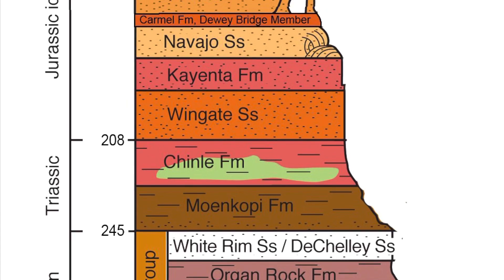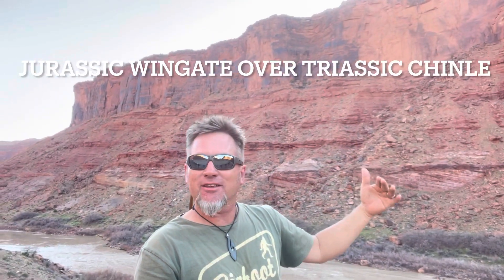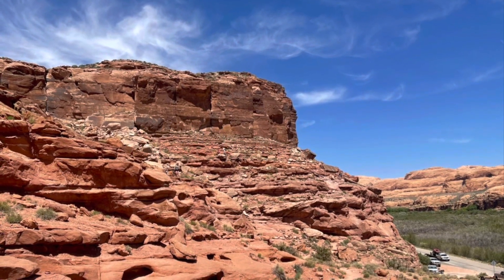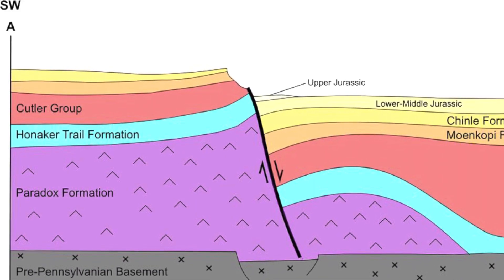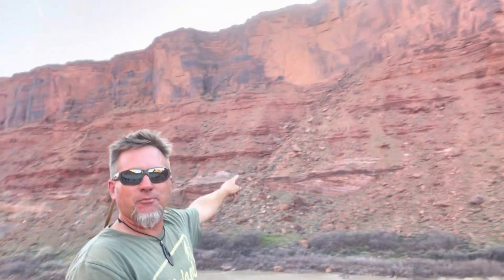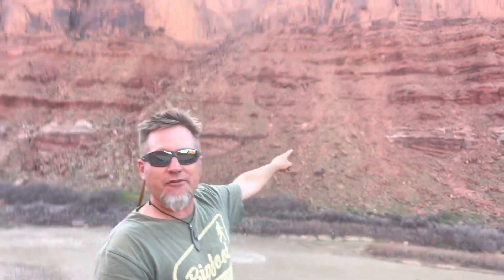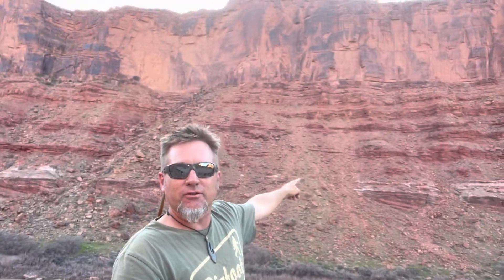Across from us is the Chinle Formation — those are fluvial channels. It looks a lot like the Kayenta, and up there is the Wingate, which looks a lot like the Navajo. We're now on the east side of the Moab fault; that other video was on the west side, so this stuff is totally differently elevated relative to what's over there. If you look across the river, those ridges in the Chinle go roughly horizontally — those are ancient river channels, probably braided streams, definitely sandy.